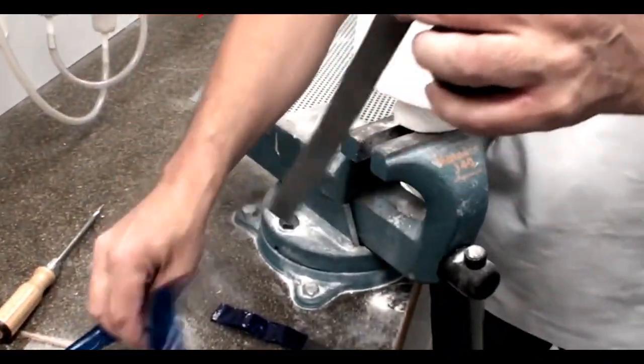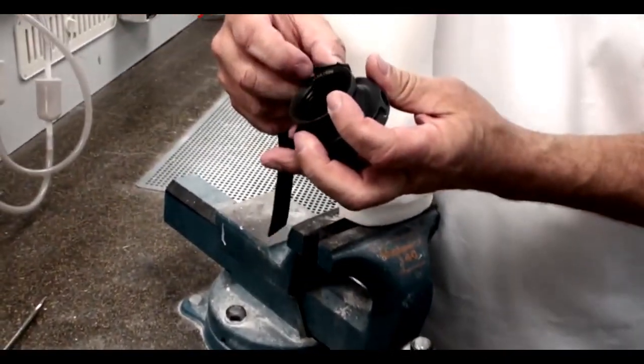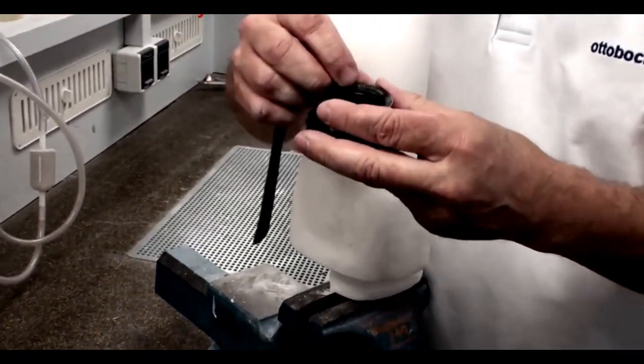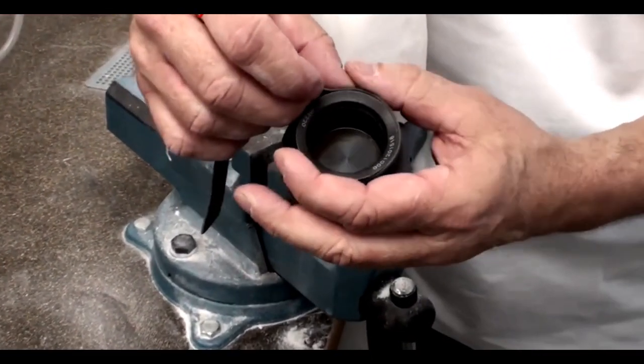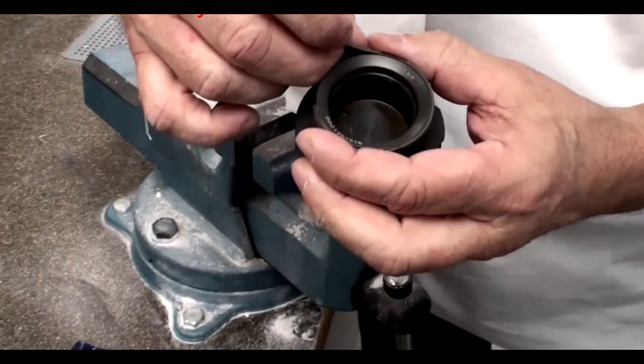Now you need to prepare the DVS pump. Take plastic band and put it around circumferentially. And this will help create a seal with the thermoplastic check socket material.